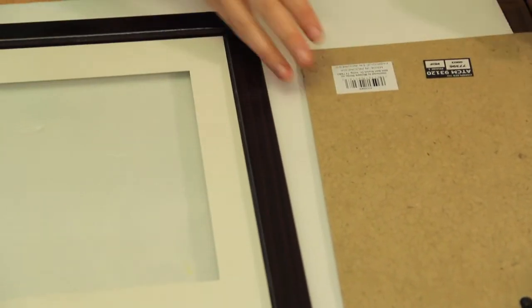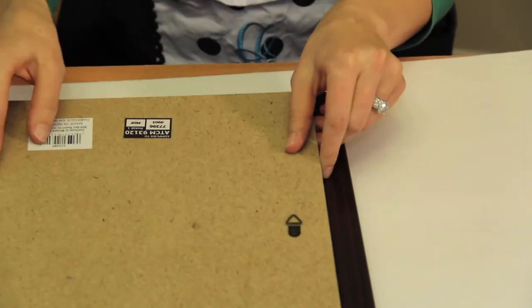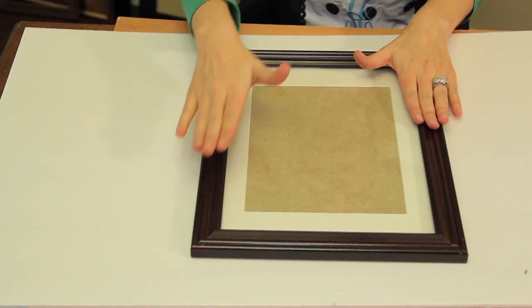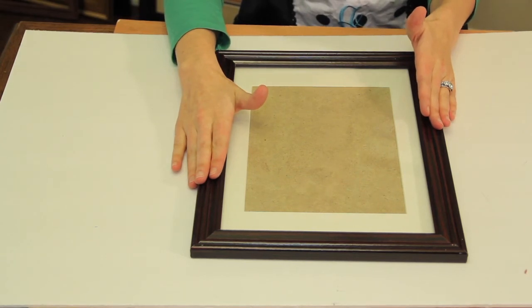Once you have that set, put your pieces back together. Once you have your glass put in, you have now put your replacement glass in your frame and it is ready to go back on your wall or on your table.